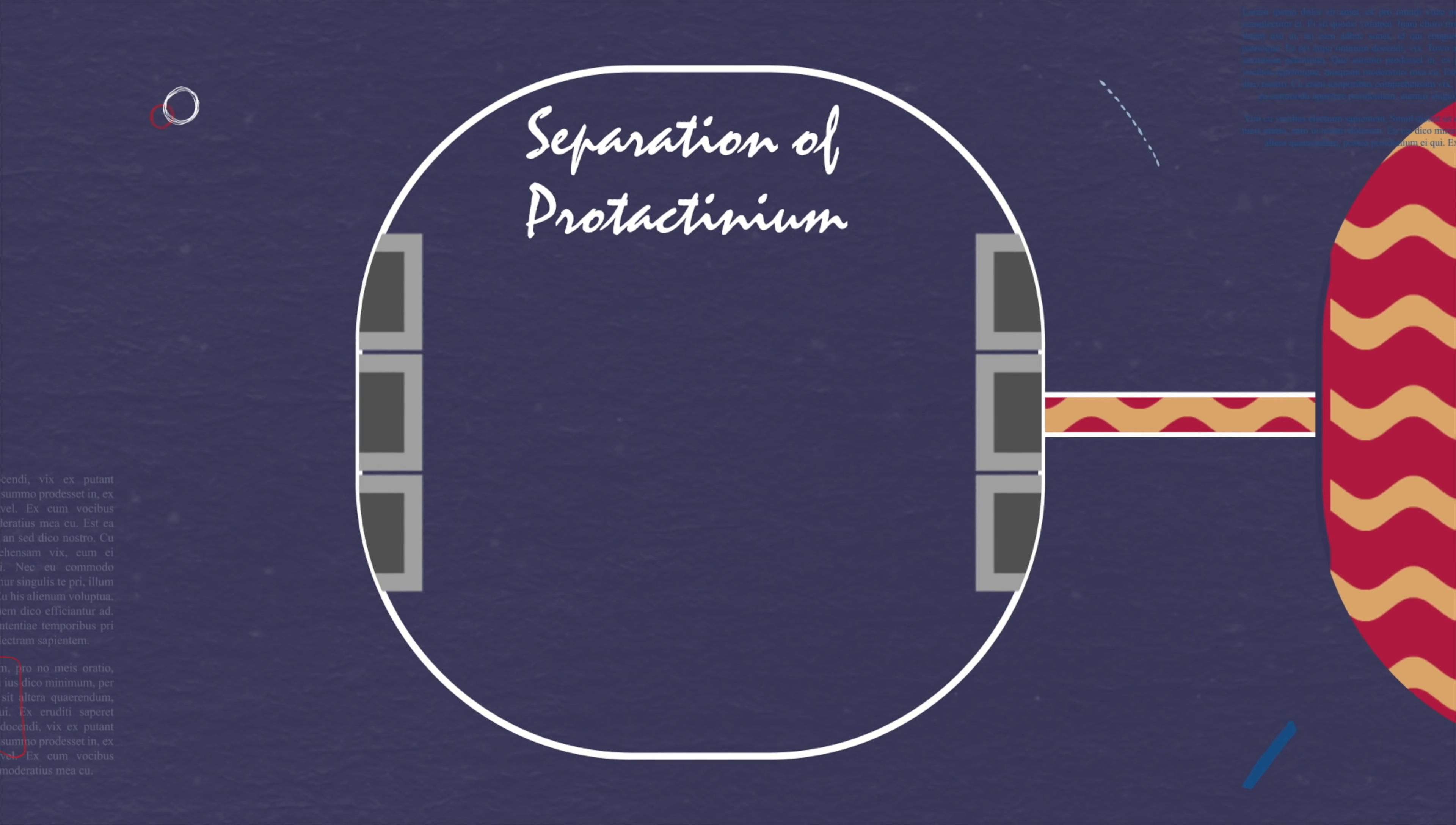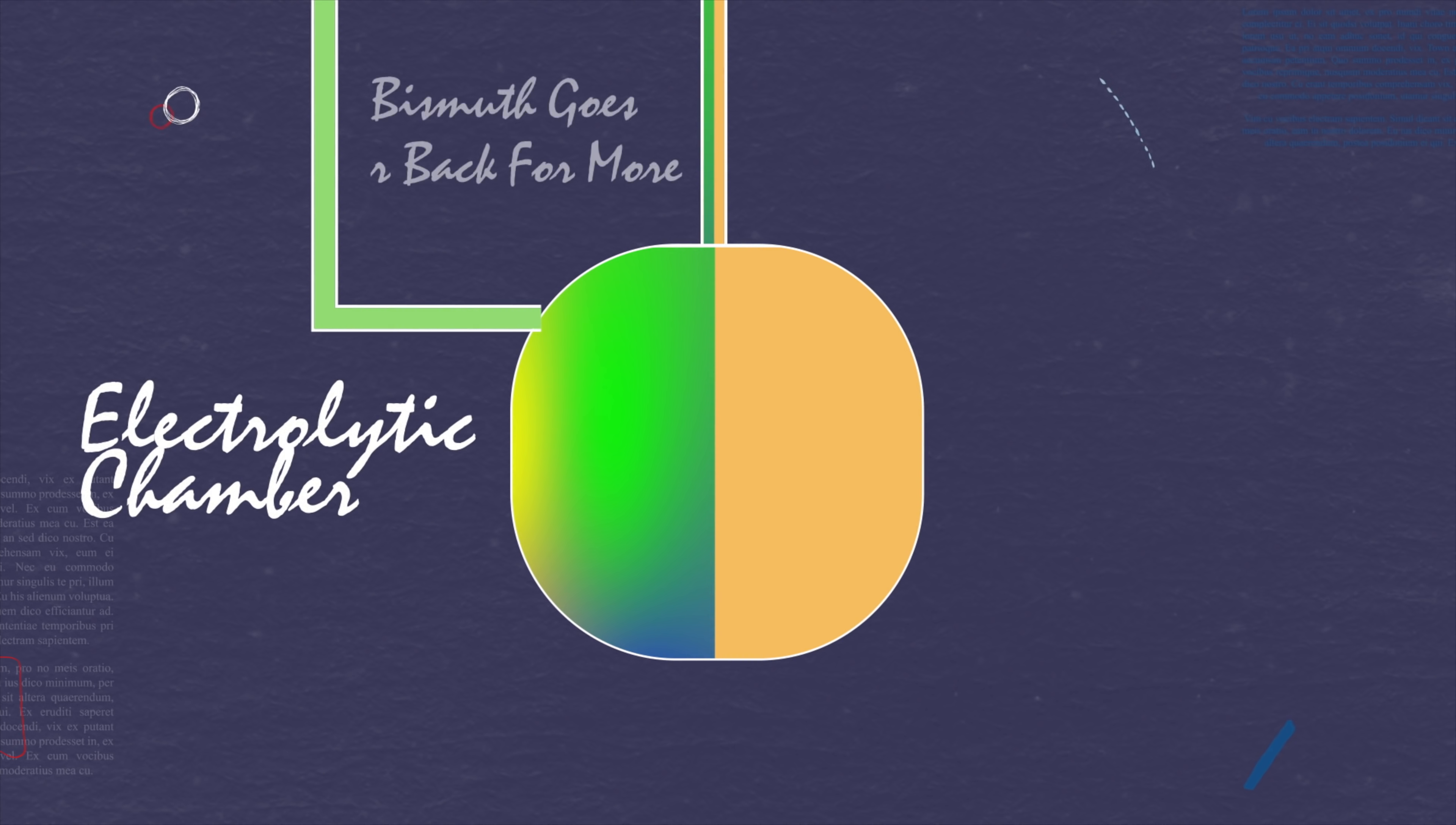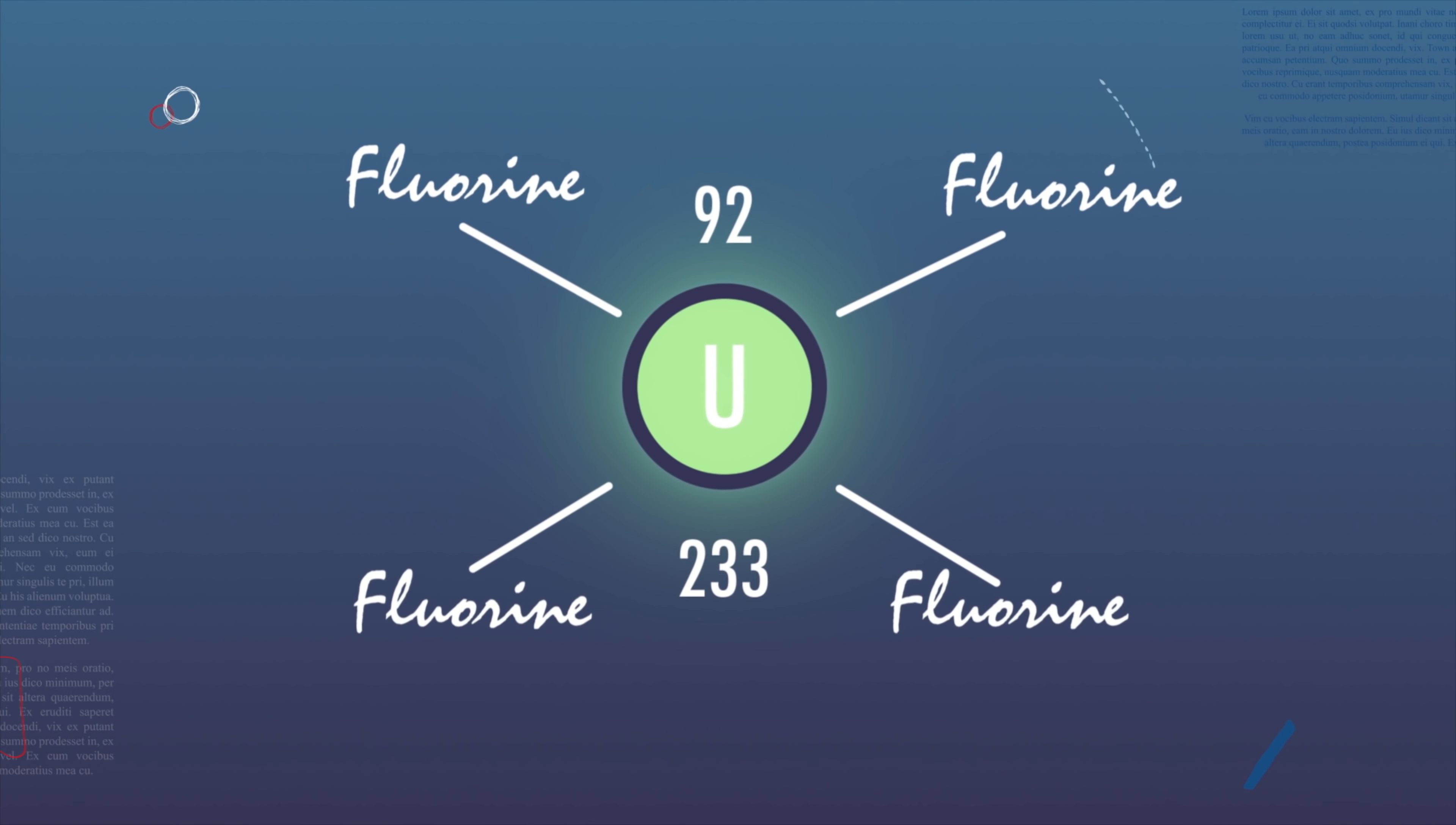The salt in the blanket is circulated in a system where different components can be separated. First, the protactinium will be separated out from the thorium using bismuth. Bismuth will dissolve the protactinium and this mixture will go into an electrolytic chamber, where they'll be separated electrolytically. Then the protactinium will be turned back from a metal into a tetrafluoride and sent to a decay chamber, where it'll rest for 28 days. When it finally awakens, it'll have turned into uranium-233, the best nuclear fuel in the whole wide world, and quite possibly the universe.